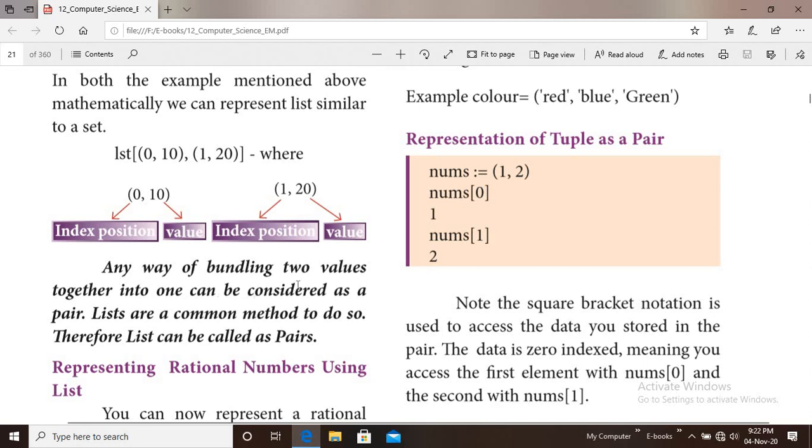0 represents the index position and 10 represents the value. Any way of bundling two values together into one is considered as a pair. Index position value in group, any way of bundling two values together into one is considered as a pair. Lists are a common method to do so. Therefore, lists can also be called as pair.